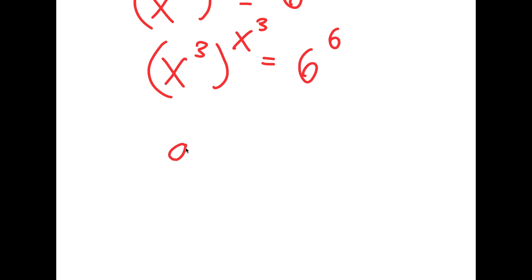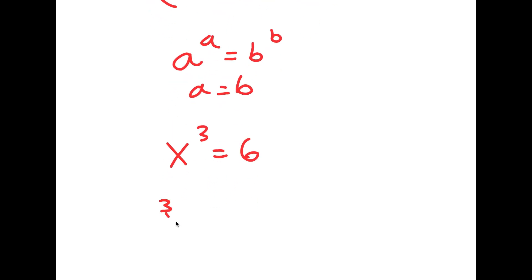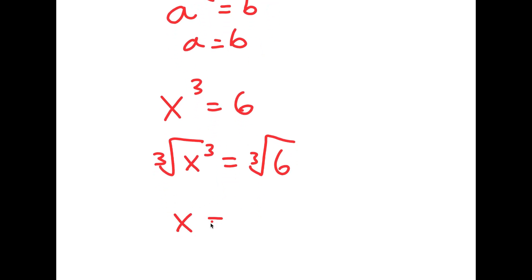Now, if I have something in the form a to the power of a is equal to b to the power of b, this means that a is equal to b. So in this case, x to the power of 3 is equal to 6. And now if I take the cube root on both sides, I get x is equal to the cube root of 6.